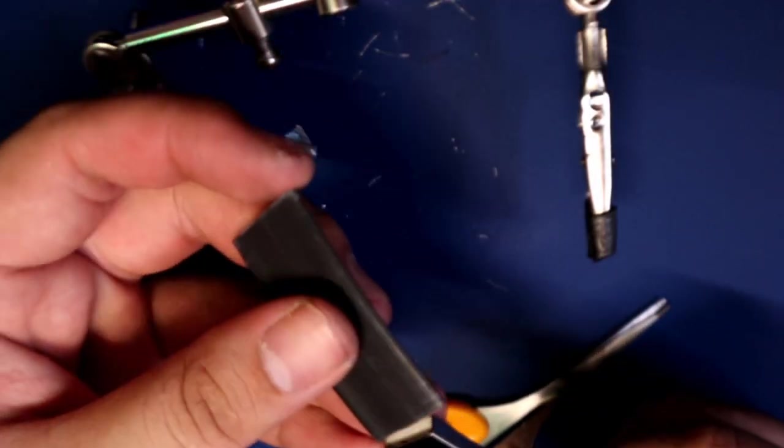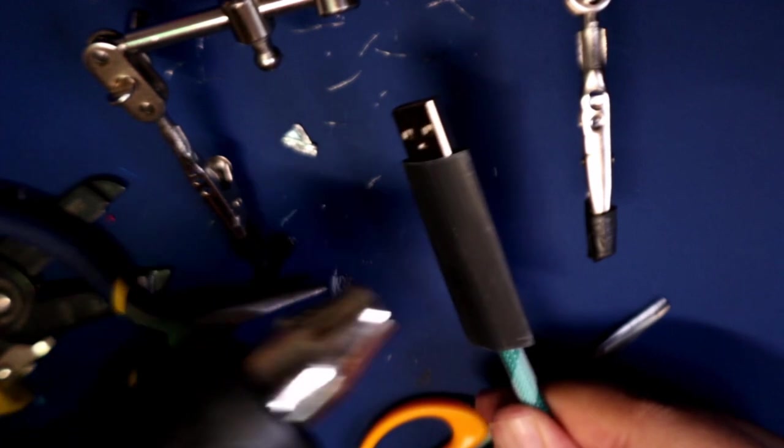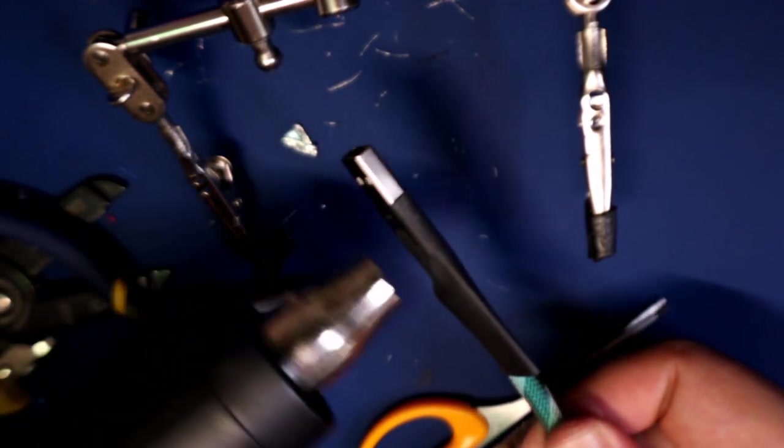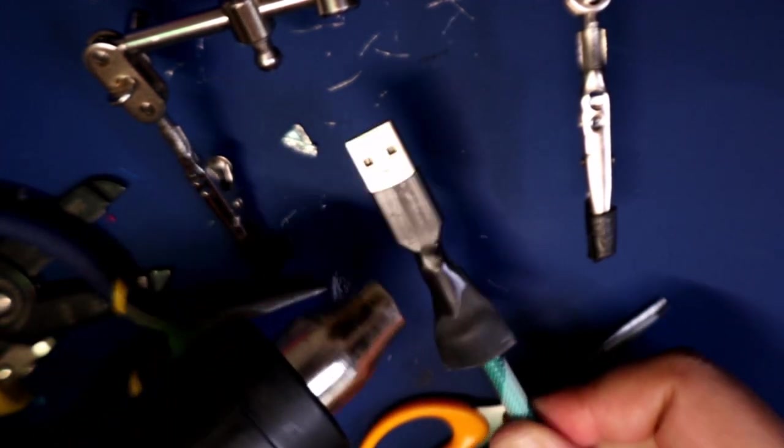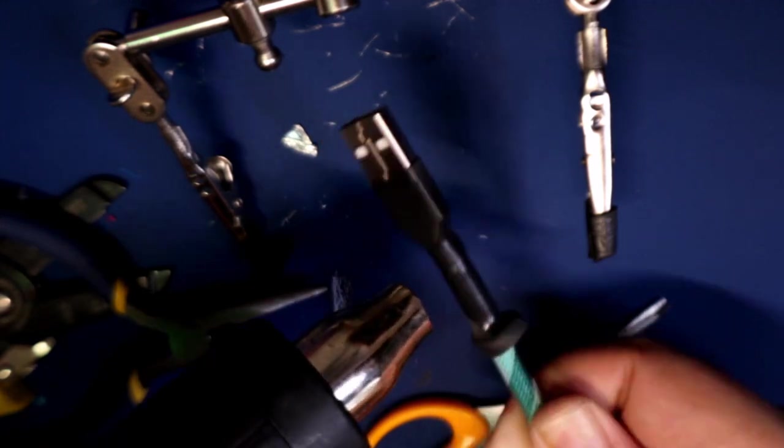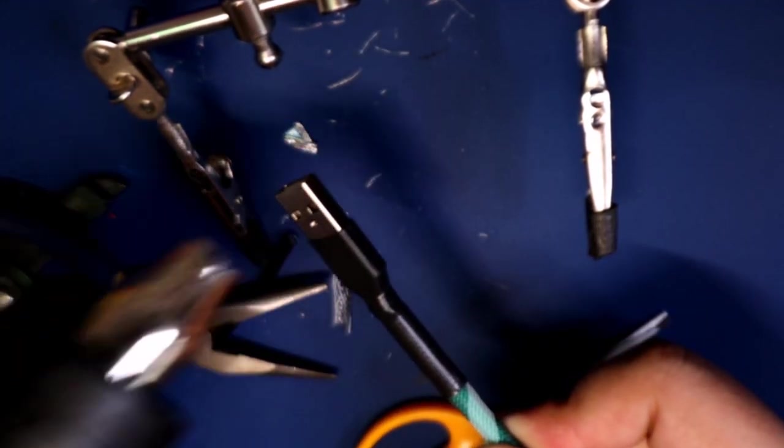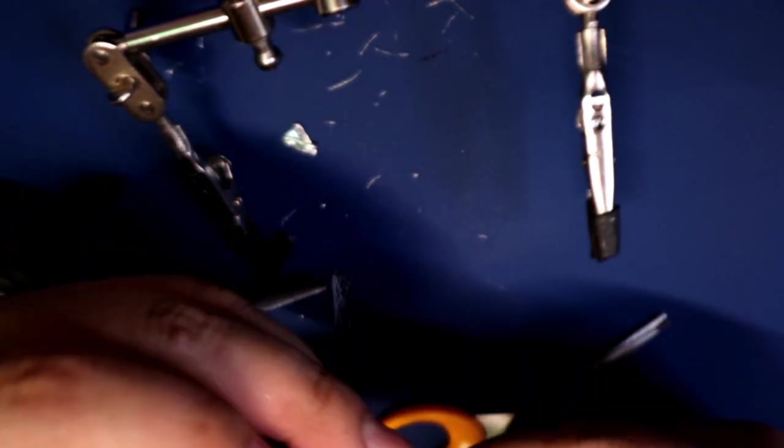All right, to finish things off here, I'm gonna grab some black heat shrink and I'm gonna heat shrink both the ends of my cable here. So for the USB-A side, I just heat gun it down. Make sure not to add too much heat if you're using tech flex or you might risk melting it.